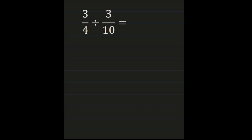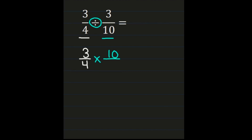For our final example, we have 3/4 divided by 3/10. We're going to walk through these steps, looking at our first fraction, the 3/4. 3/4 needs to stay exactly the way it is. After leaving our first fraction exactly how it is, we move on to the division sign, and that division sign is going to become a multiplication sign. We're going to be multiplying 3/4 times the reciprocal of 3/10. The reciprocal of 3/10 is 10/3. Then we're ready to multiply, so let's look at our numbers and see if we can simplify first.